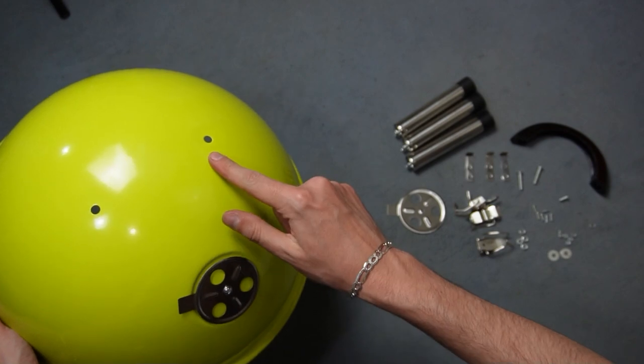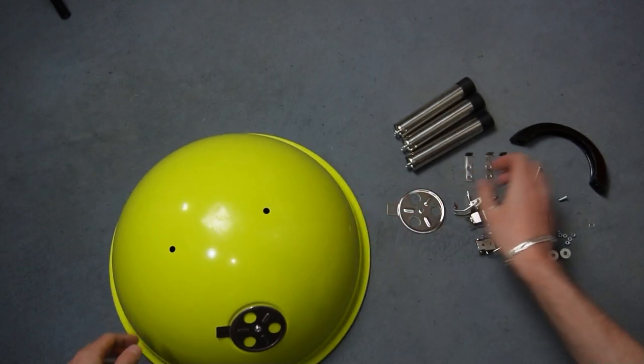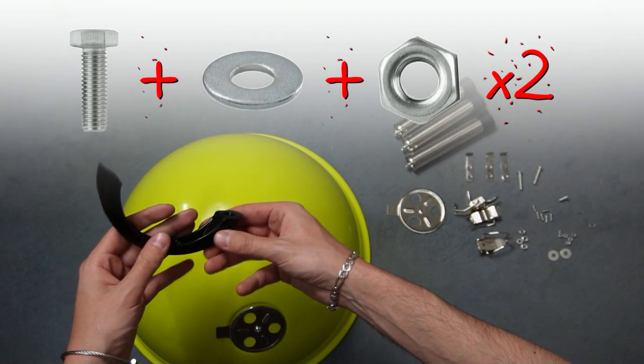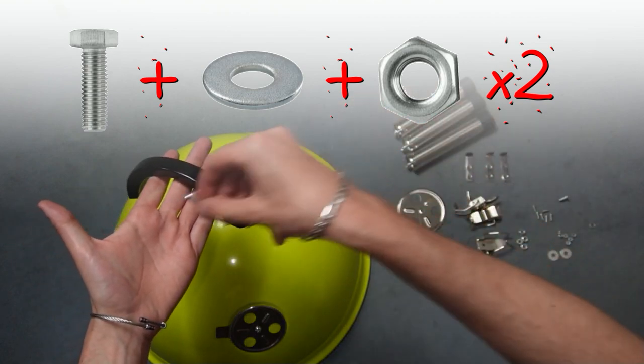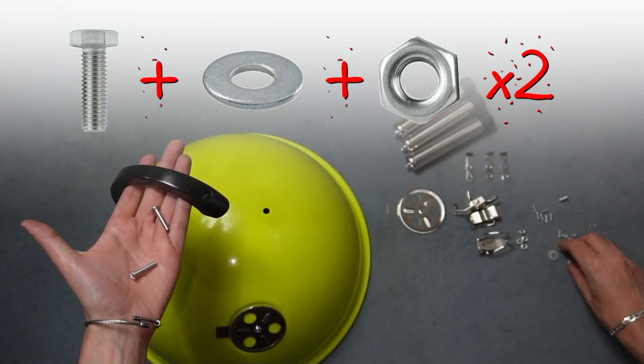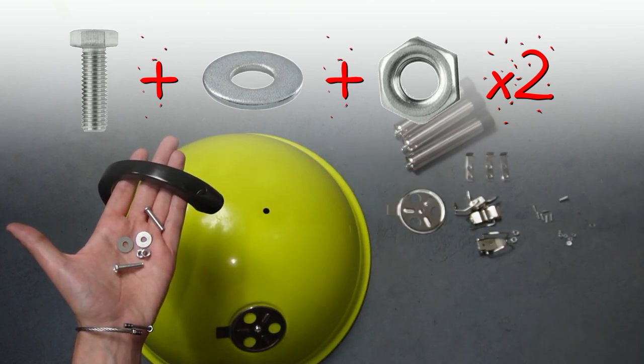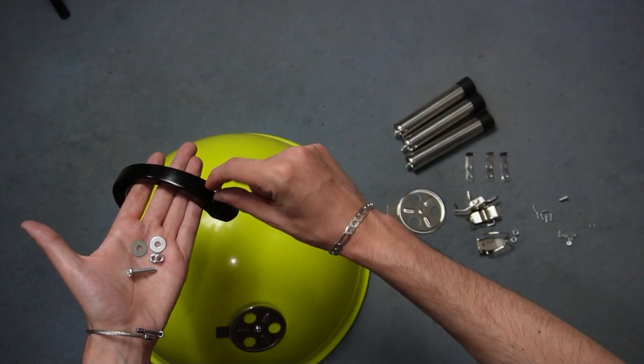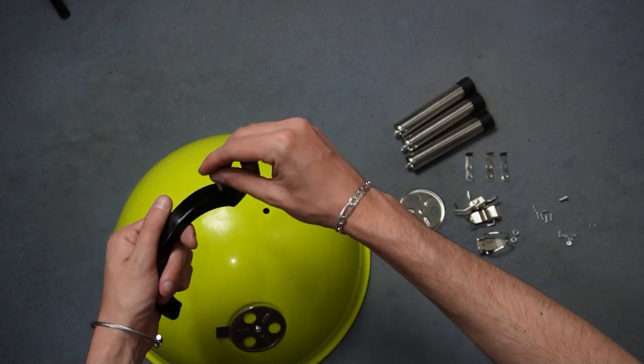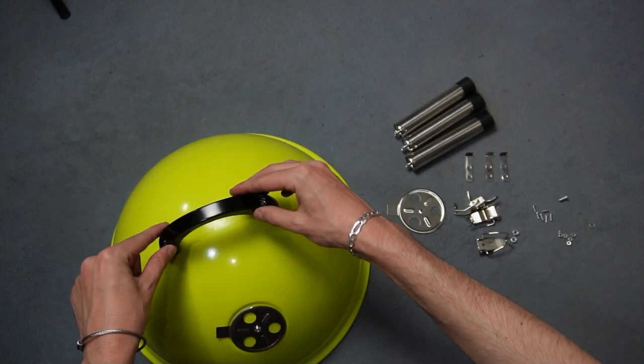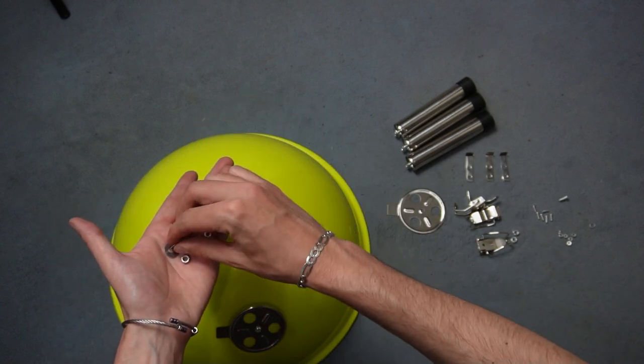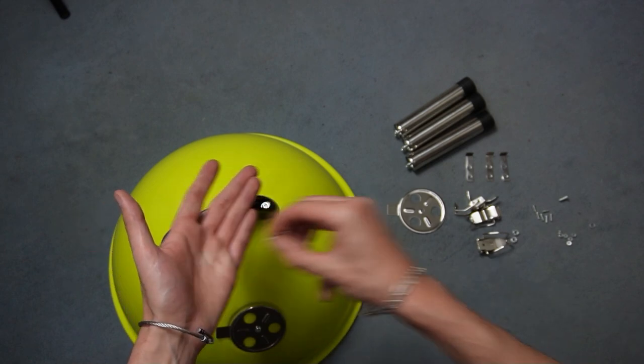Let's install the lid handle. You need to take the two long bolts, two flat washers, and two big nuts. Put the bolts into the holes of the handle and put the handle on top of the lid. Now turn the lid upside down.